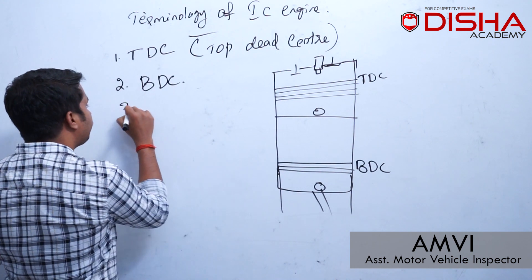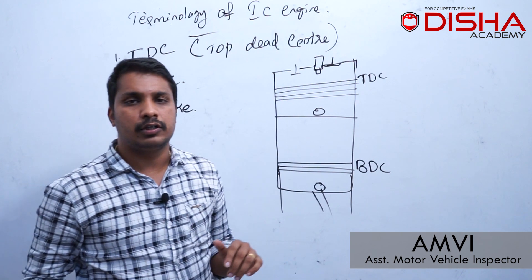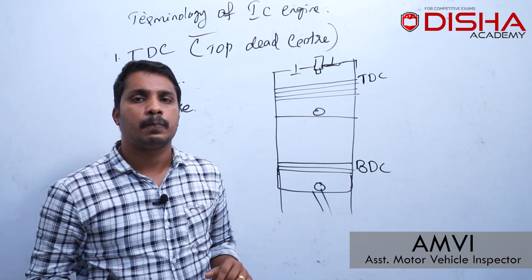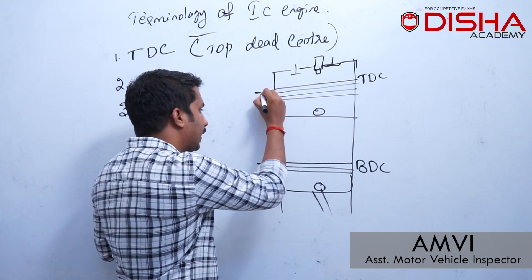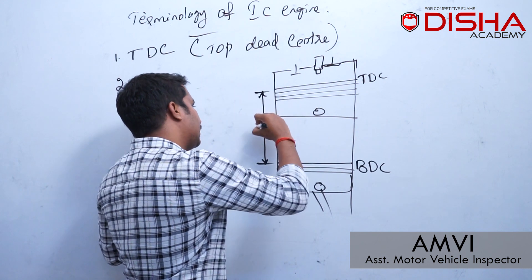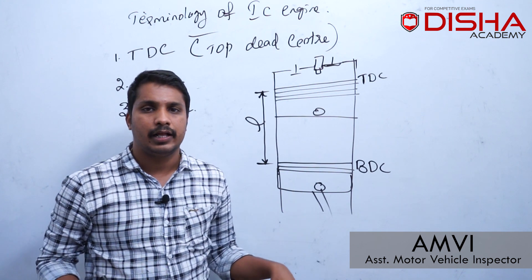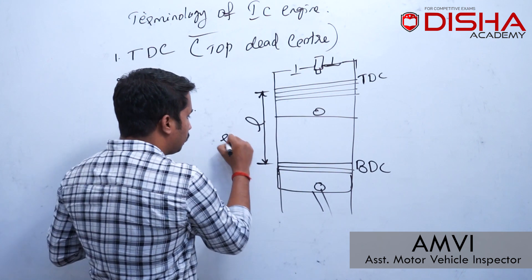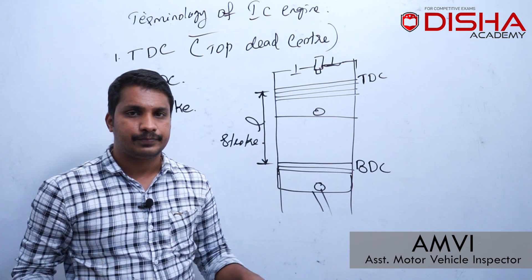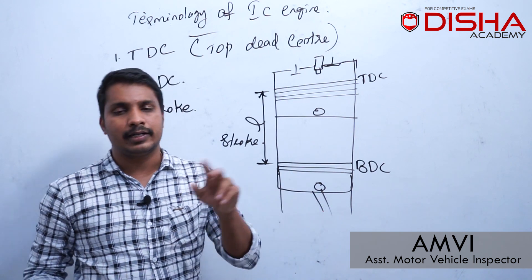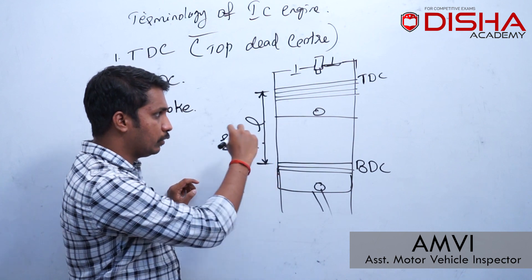What is stroke? You may have heard of 4-stroke engines and 2-stroke engines. Stroke is defined as the distance between TDC and BDC — that is, the distance between the Top Dead Center and the Bottom Dead Center is called stroke.